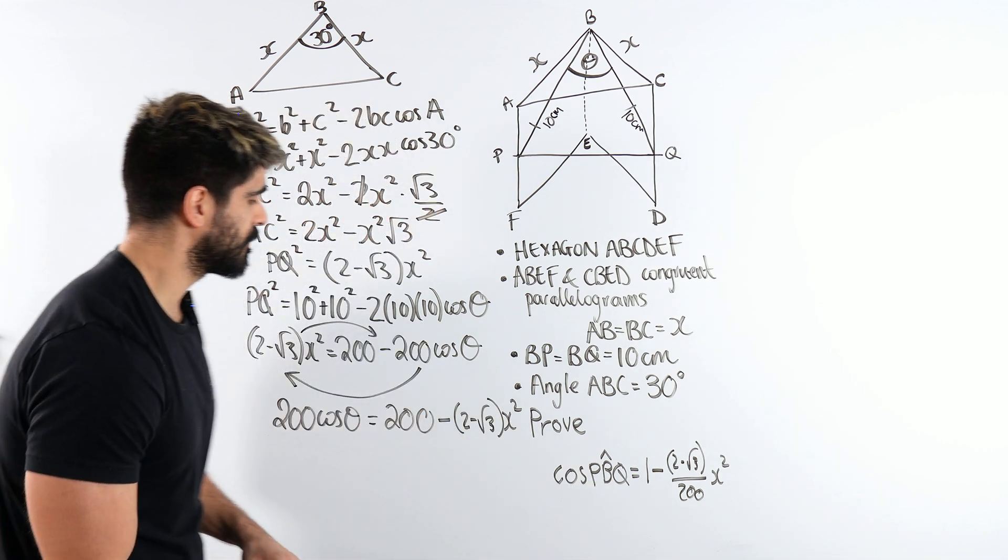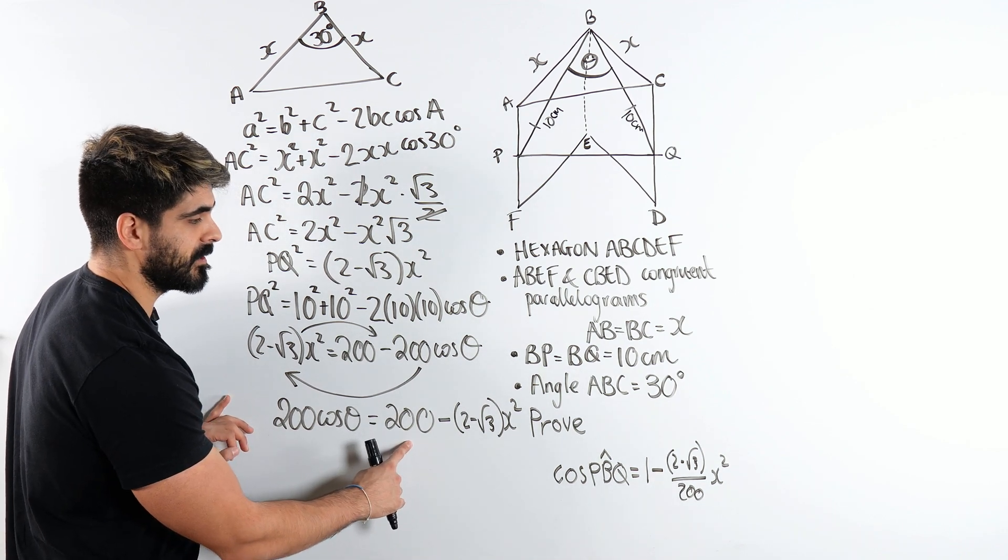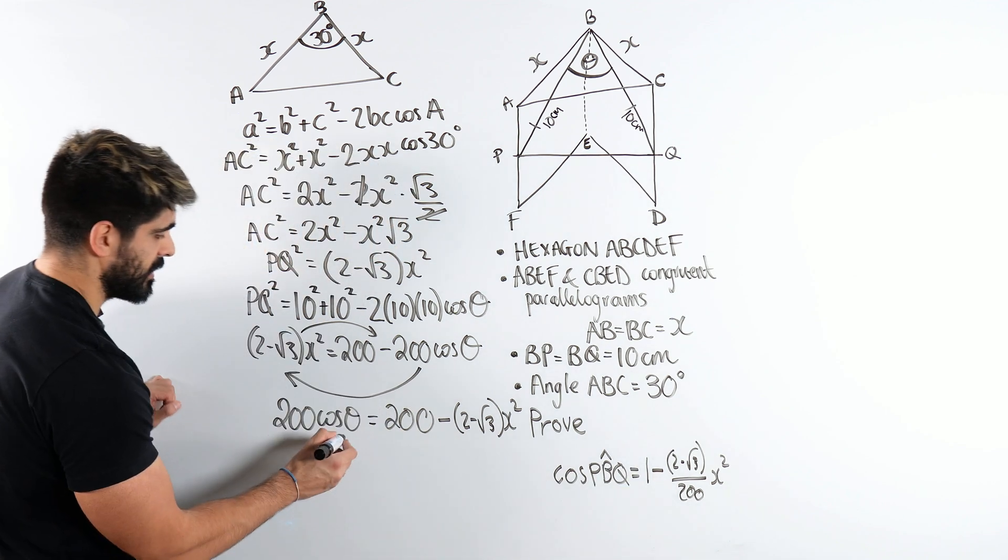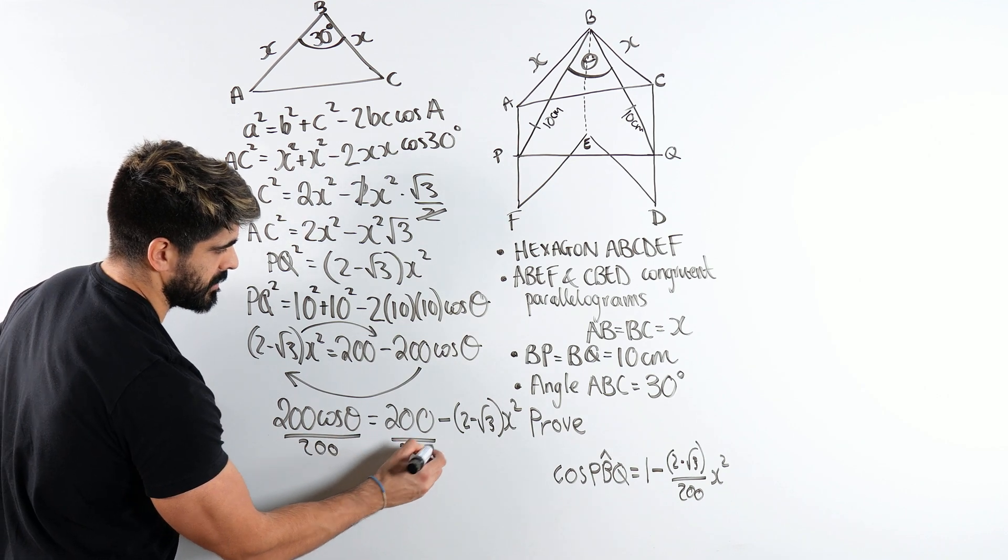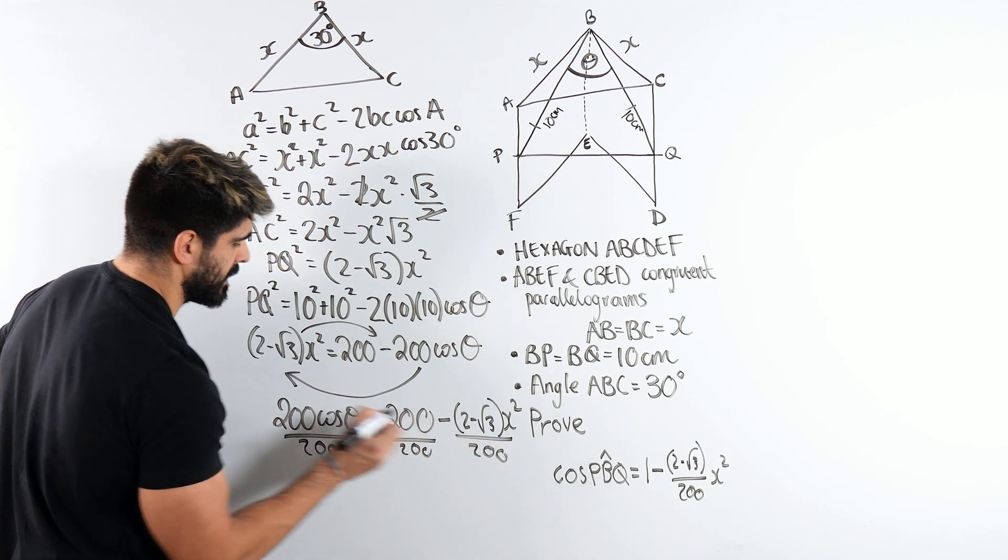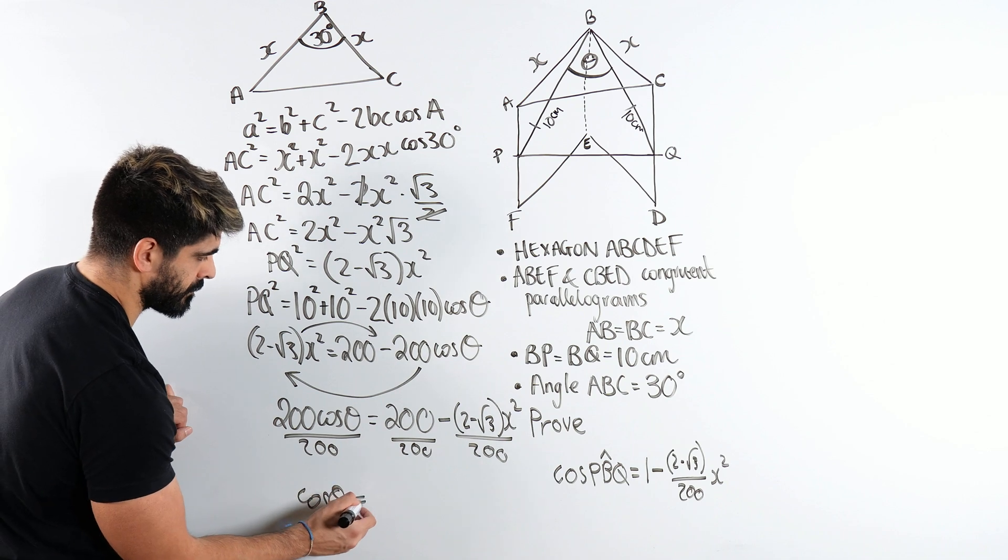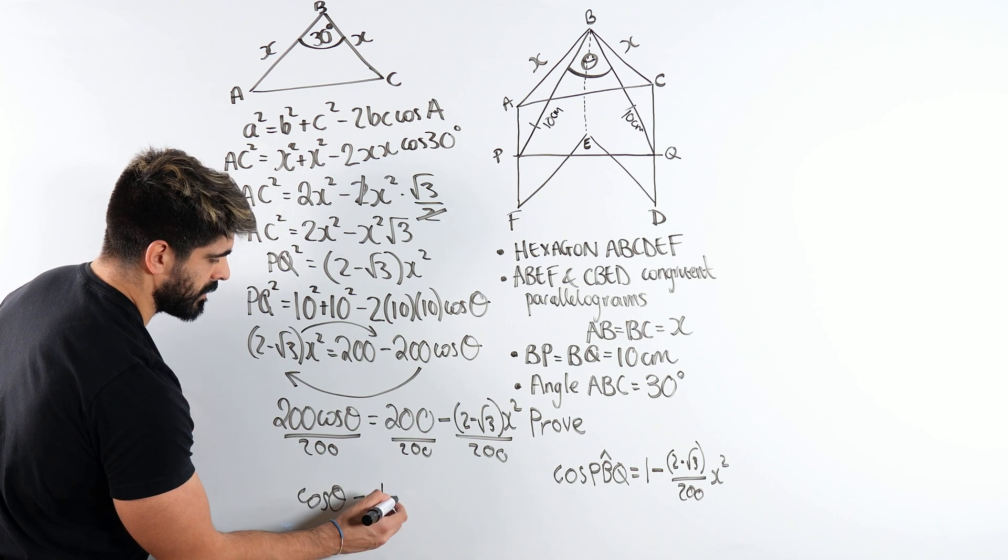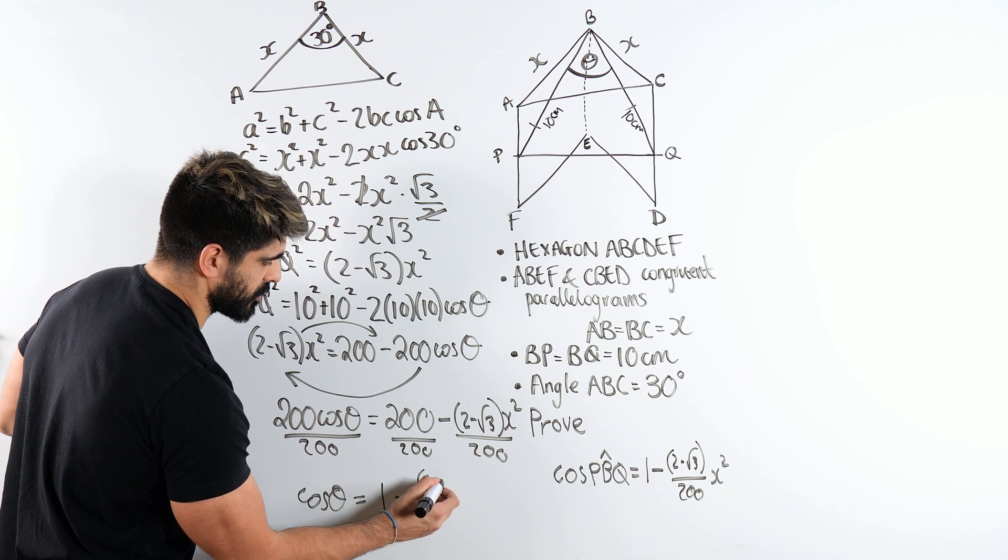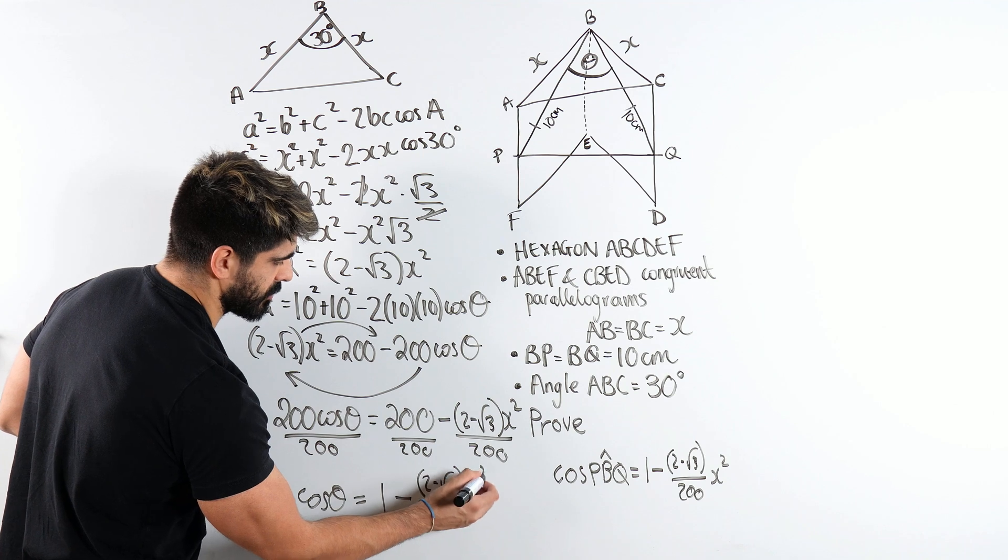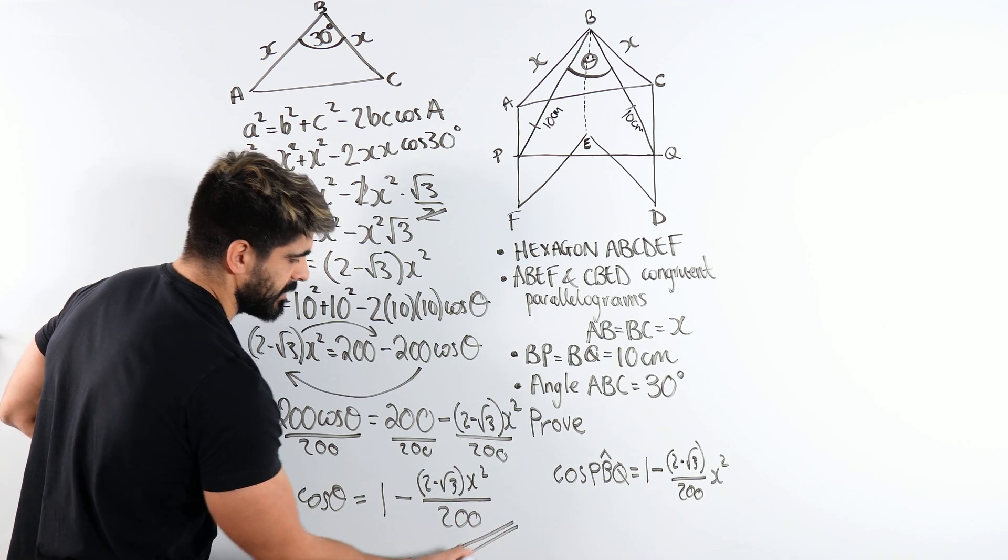Now, can you see how they're getting this? There's no coefficient of 200. So I'm literally going to divide through by 200. But can you see they have 1 here, they've clearly split the fraction. So they're actually dividing everything by 200. And there's our answer. So cos of theta is 1 minus this fraction, which is what they were looking for, (2 minus root 3) X squared, all divided by 200. And that is proved.